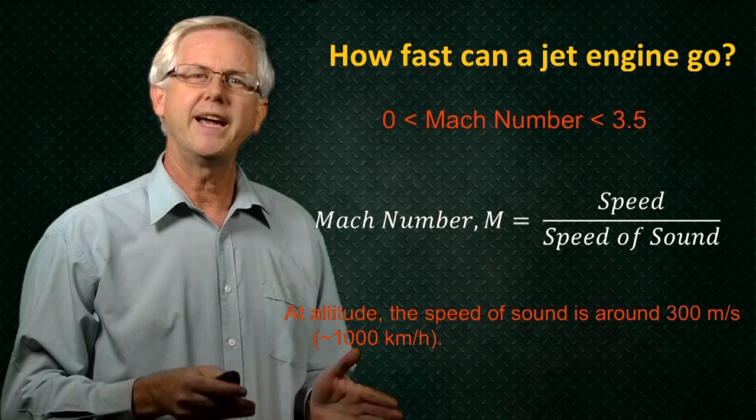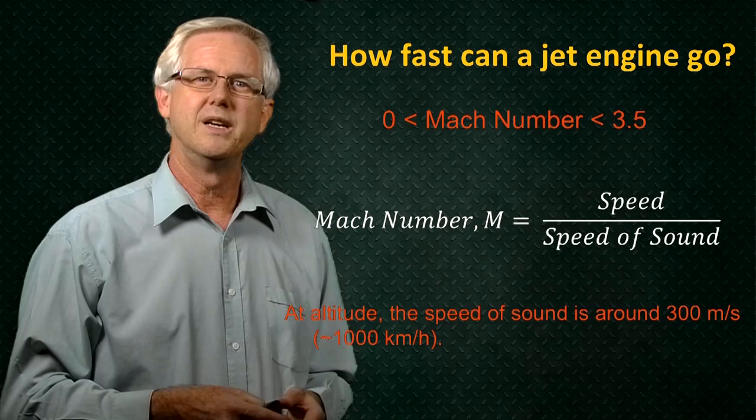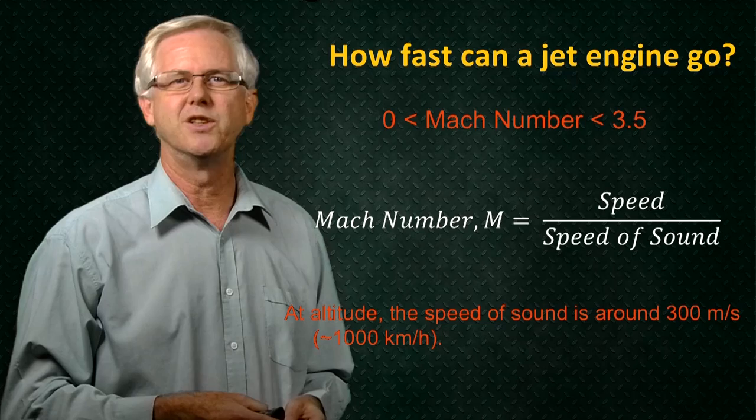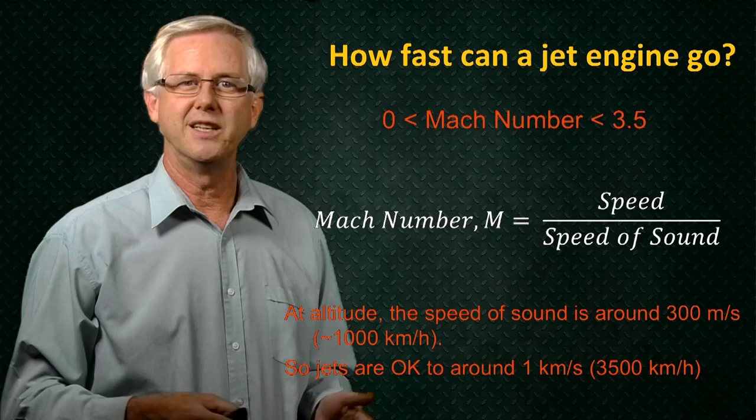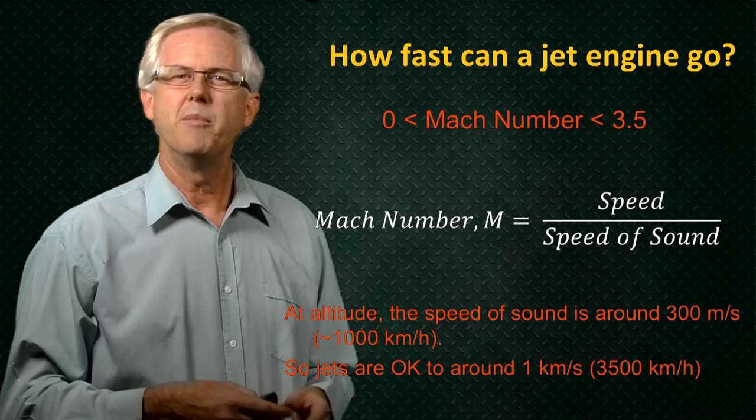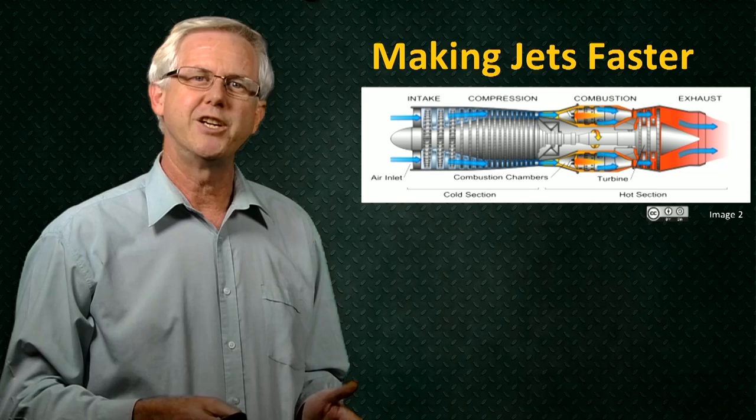So if we're flying at altitude, where the air temperature is lower than at the ground level, then the speed of sound is around 300 metres per second, around that 1,000 kilometre per hour mark. Therefore, jets are good for getting us up to speeds of around 1,000 metres per second, that is 1 kilometre per second or around 3,500 kilometres per hour, but not for getting us up to hypersonic speeds.